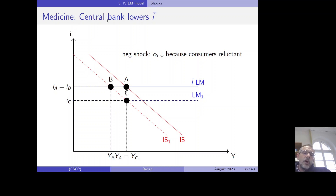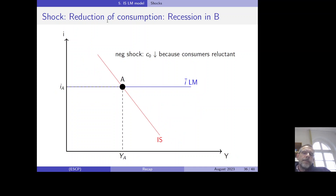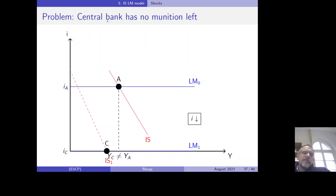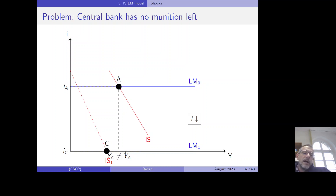But consider a much larger negative shock: the IS curve shifts very far to the left. Even if the central bank lowers the interest rate all the way to zero, the GDP level at point C, yC, remains below the original level yA. The economy is still in recession, and there is no ammunition left — the central bank cannot lower the interest rate into negative territory. This is the zero lower bound, and the central bank is trapped.